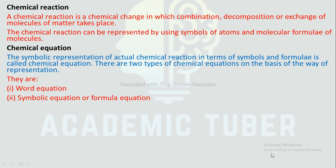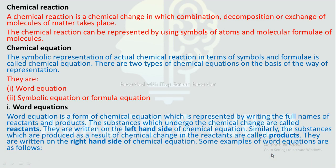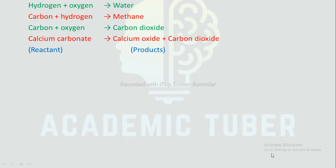There are two types of chemical equation based on the way of representation: word equation and symbolic or formula equation. Word equation is a form of chemical equation in which it is represented by writing the full name of reactants and products. The substances which undergo chemical change are called reactants and are written on the left hand side. The substances produced as a result of chemical change are called products and are written on the right hand side. Examples: hydrogen plus oxygen gives water; carbon plus hydrogen gives methane; carbon plus oxygen gives carbon dioxide; calcium carbonate on decomposition gives calcium oxide and carbon dioxide.